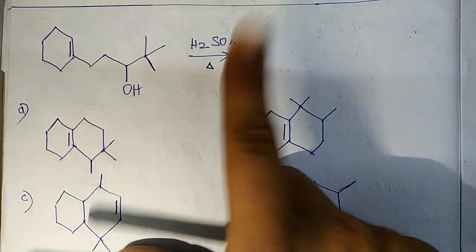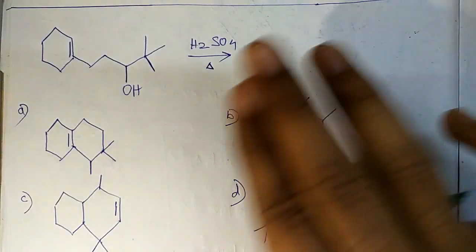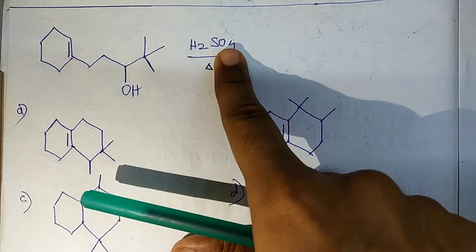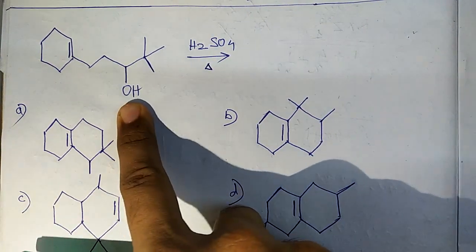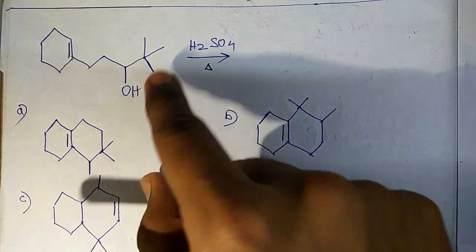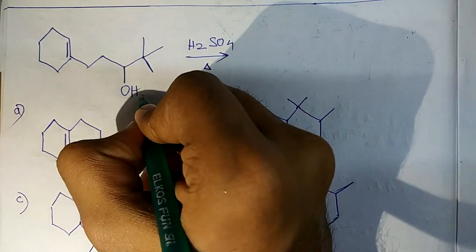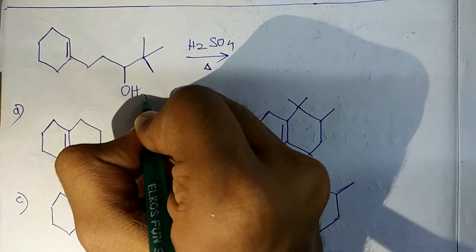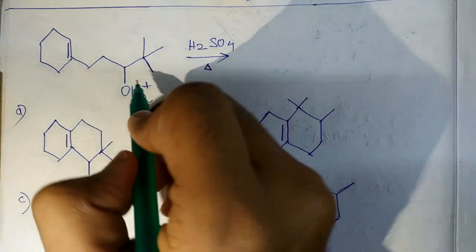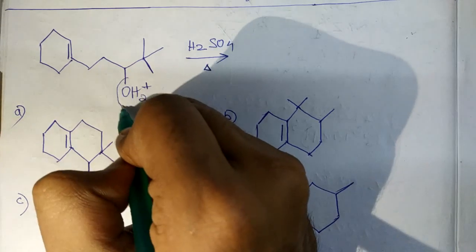H2SO4, as it is concentrated (here is not given but we assume concentrated H2SO4), will directly attack. We know that it will give H+, so H+ will be donated here. It will be converted to OH2+, which is a good leaving group, so it departs from here.